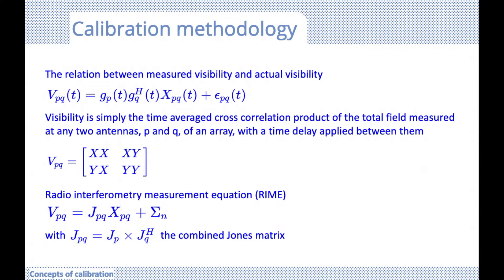This matrix notation is used throughout our calibration equations and defines our per-antenna Jones matrices. These Jones matrices summarize all the many effects that our signal experiences as it propagates towards our correlator. We combine all these various matrices through multiplication into a single Jones matrix that can describe the entire product per antenna.